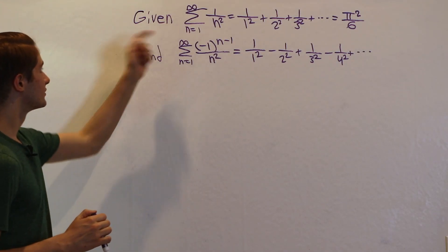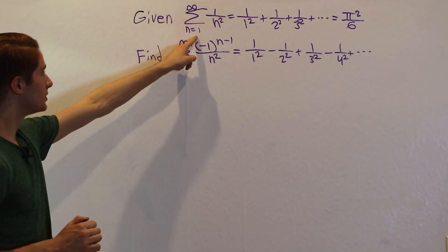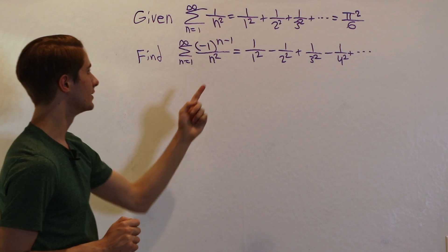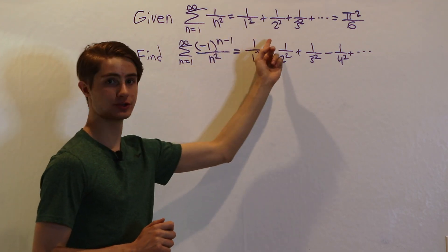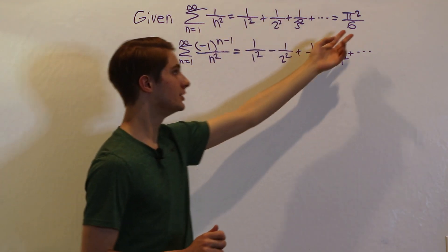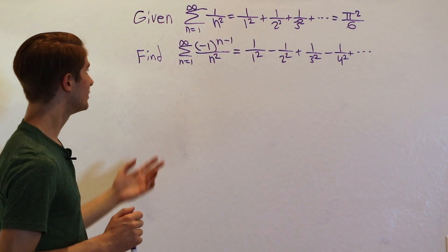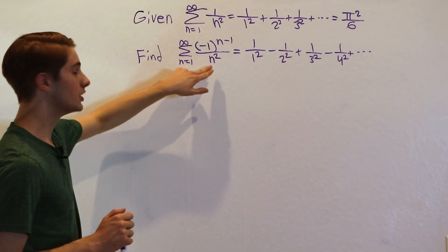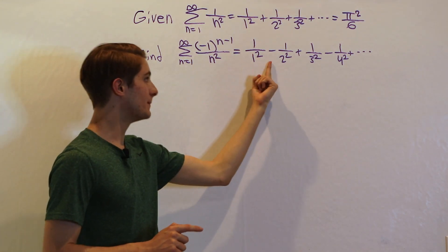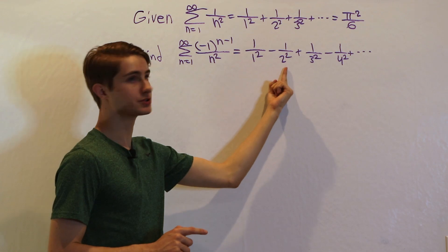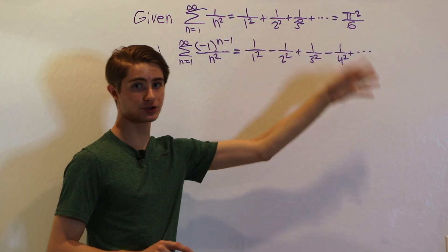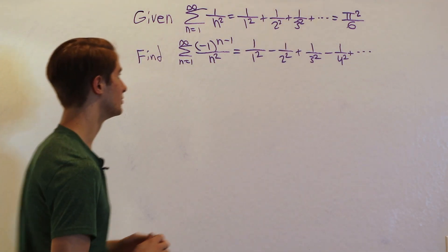We are given that the sum from n equals 1 to infinity of 1 over n squared — which is 1 over 1 squared plus 1 over 2 squared plus 1 over 3 squared and so on — is pi squared over 6. And we want to find the alternating version of this series: 1 over 1 squared minus 1 over 2 squared plus 1 over 3 squared minus 1 over 4 squared, and so on.